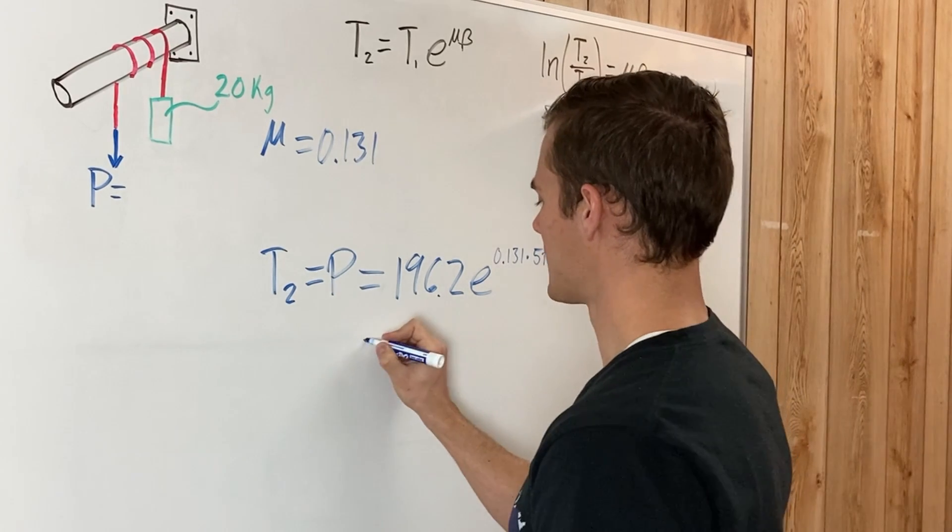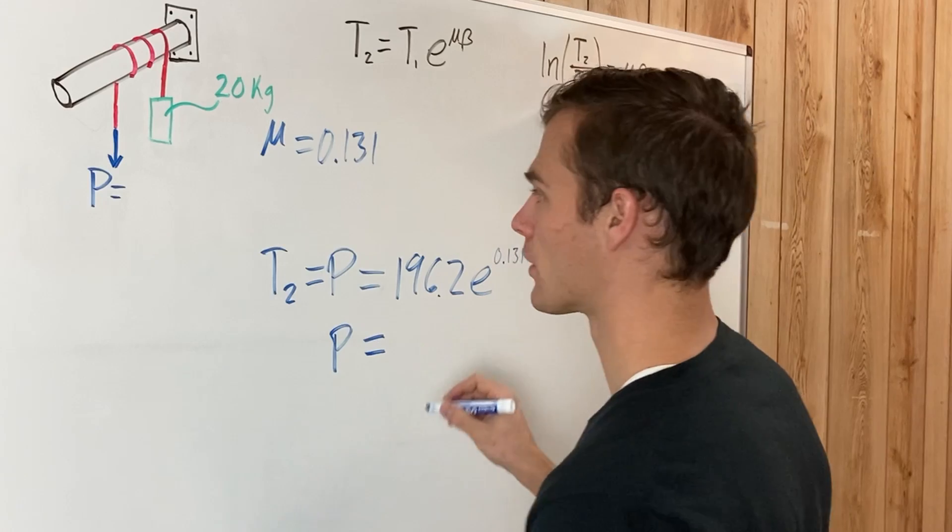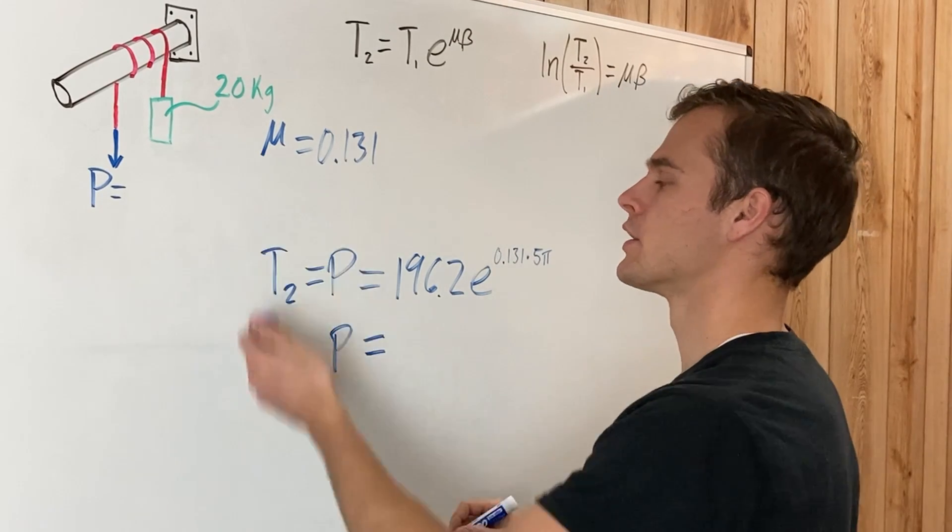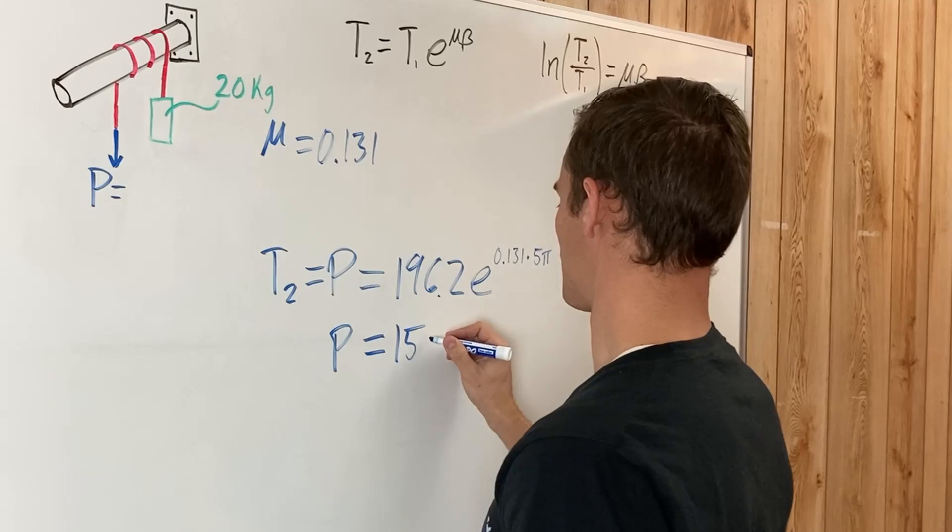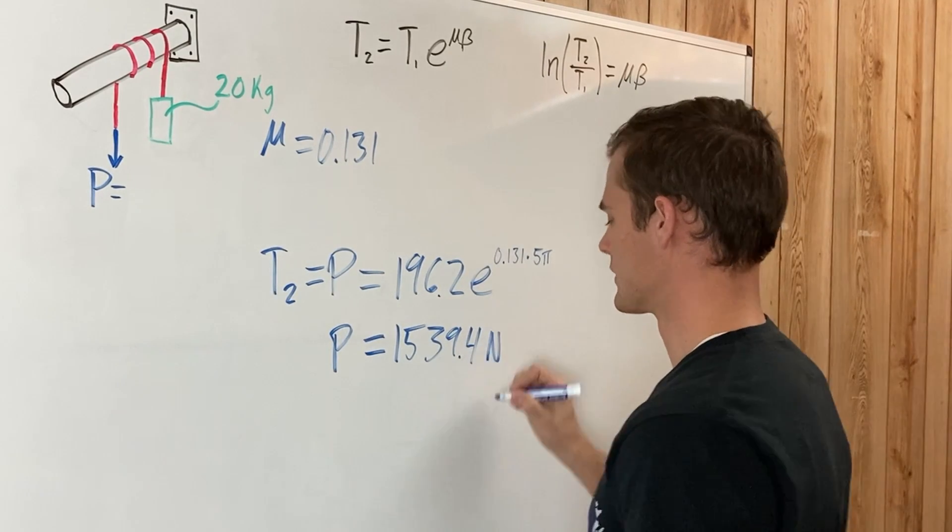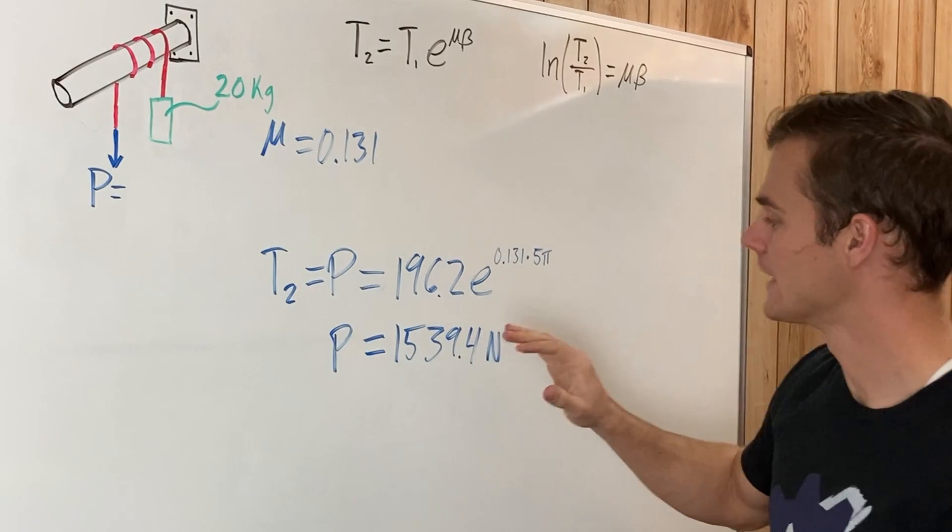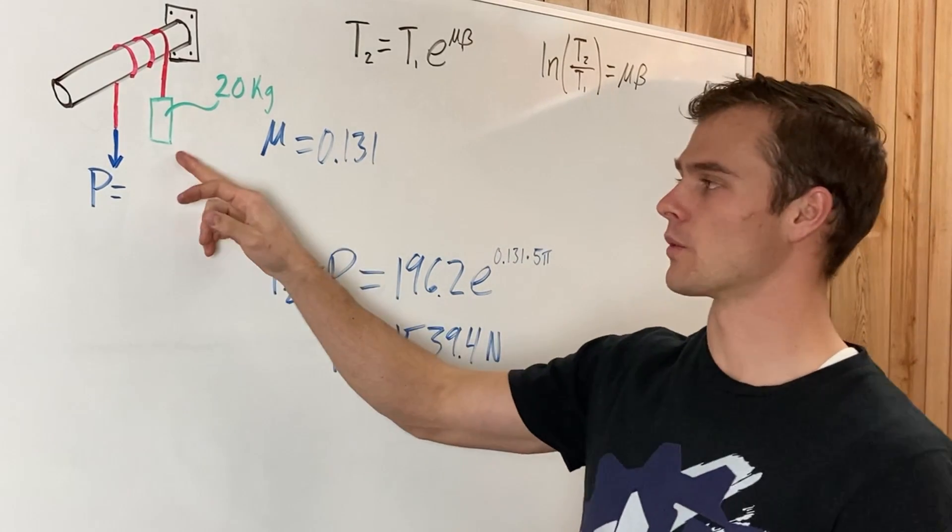So plugging that into your calculator, and you end up getting that P, the force needed to start pulling this rope up, is 1,539.4 newtons. So that is a lot bigger force than the 25 newtons needed to just hold this weight up.